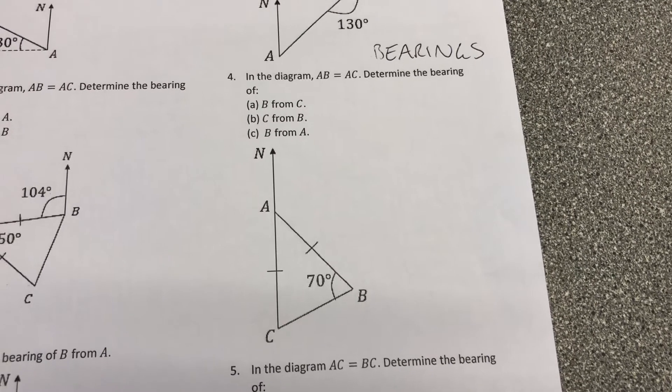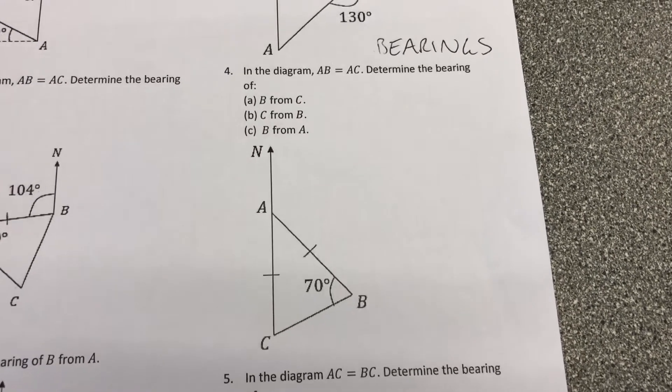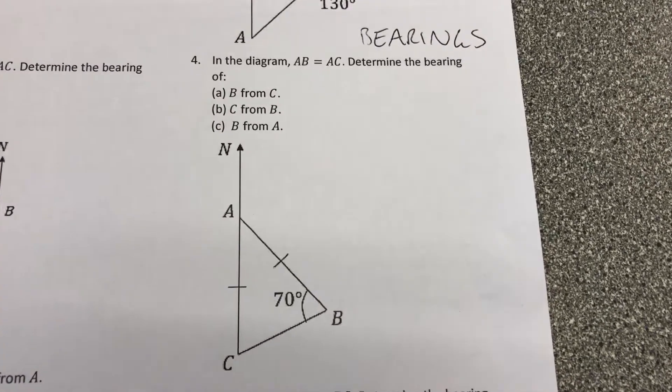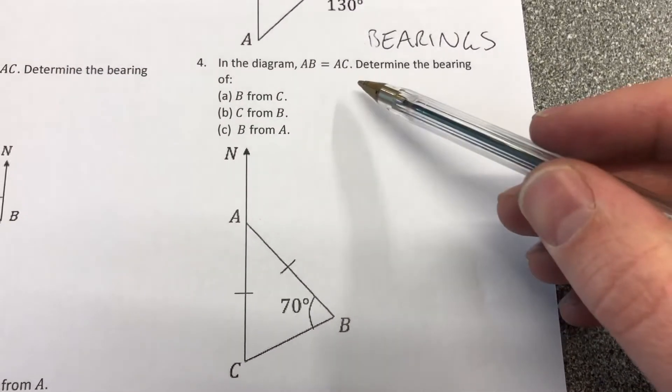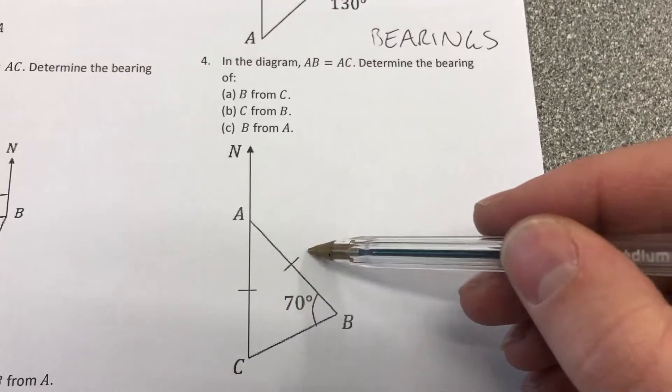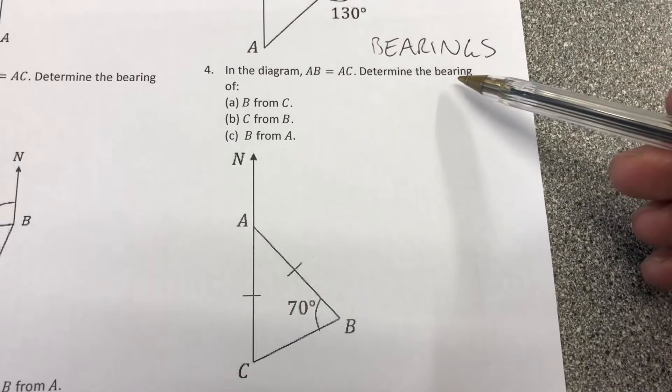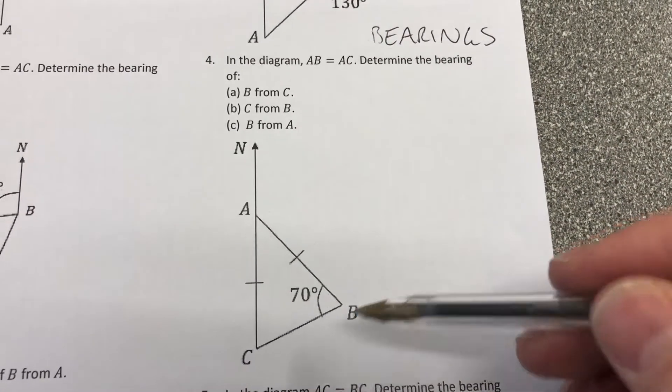Hello and welcome to Maths and Maths. My guest presenters are helping me with a bearings question. So we've got here in the diagram AB equals AC, so those are those dashed lines. We're going to determine the bearing of B from C.